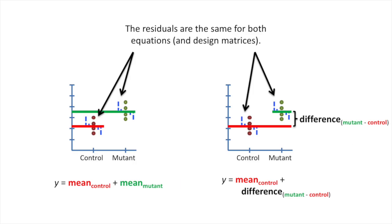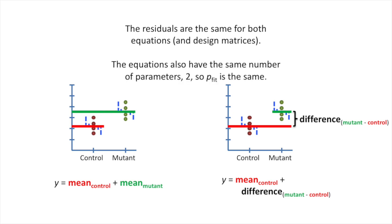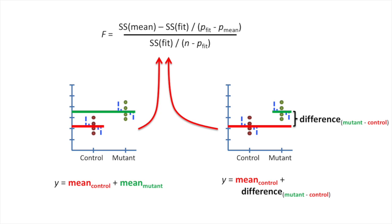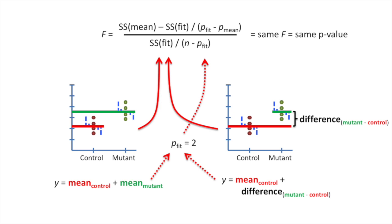The residuals are the same for both equations and design matrices. The equations also have the same number of parameters, so p-fit is the same. In our equation for F, we plug in the exact same value for the sum of squares around the fit, and the exact same value for the p-fit parameter. This results in the exact same value for F, and that means we get the exact same p-value.